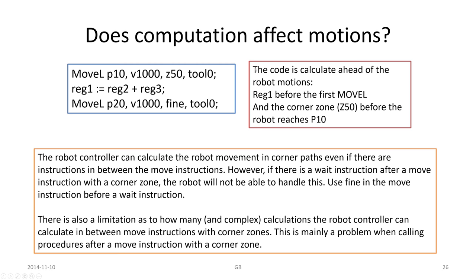Does computation affect motions? That's a good question. In the simple case, no, but in some cases it really does. What happens is that the code is actually calculated ahead of the robot motion. If you have a MoveL here to target P10 and then we have a calculation, we update register 1 and register 2 and then MoveL to P20.